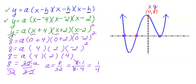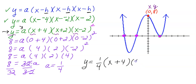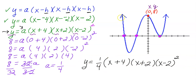The last step is to copy the equation and replace A with 1 fourth. So: Y equals one-fourth times (X plus 4) times (X plus 2) times (X minus 2) squared. This equation represents, or models, this polynomial function.